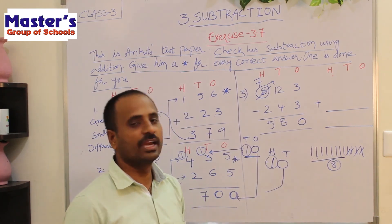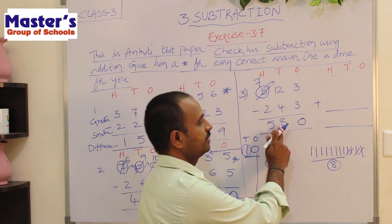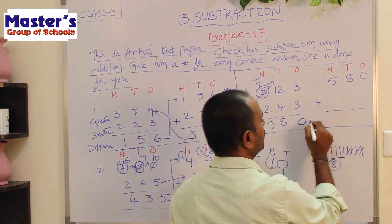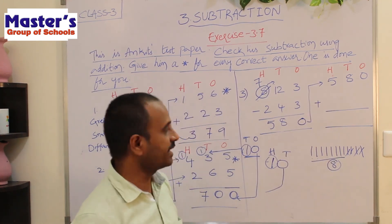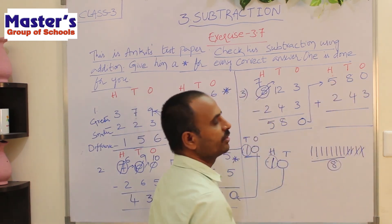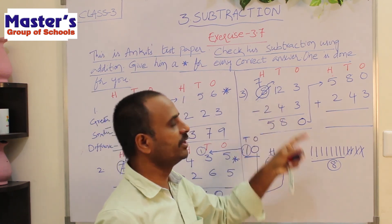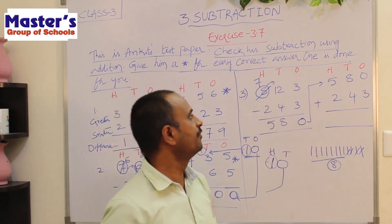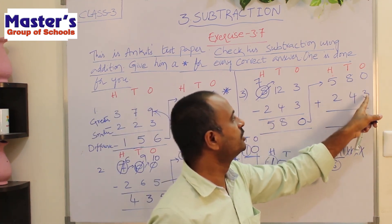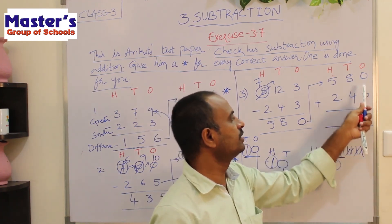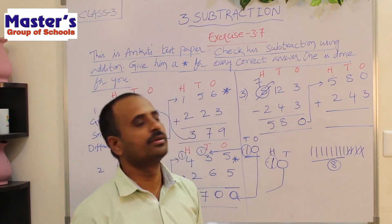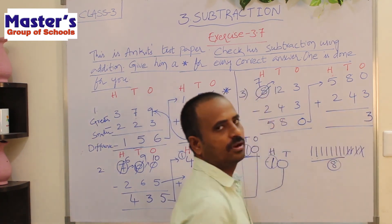Add the second number 243 to the difference 580. In ones place: 0 and 3. If we add 0 to any number we get the same number — so the answer is 3. Go to tens place: 8 and 4 are present.